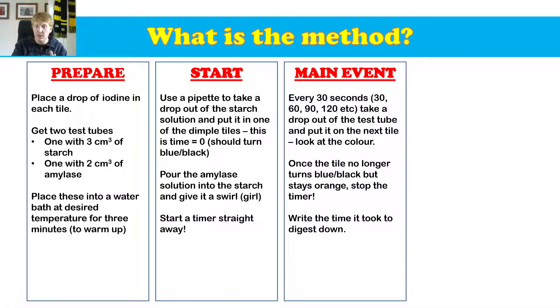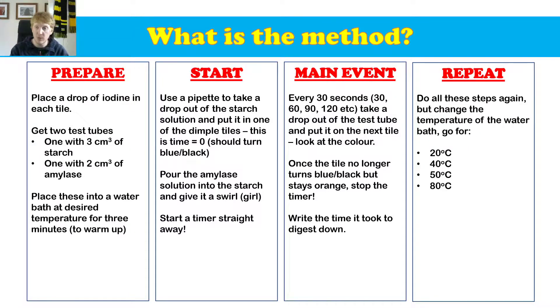Every 30 seconds, what's going to happen is we're going to take a drop out of that test tube, and we're going to pop it on the next dimple tile that we have. And we're going to look at the colour. Once the tile no longer turns blue-black and stays orange, we're going to stop the timer. That's the first part of the experiment done. We're going to write down the time it took to digest in our books.